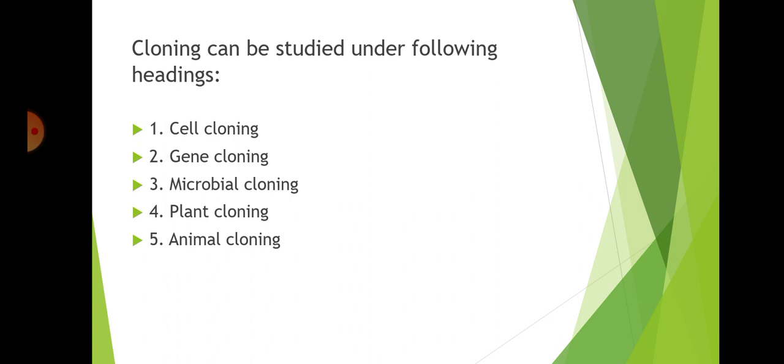Animal cloning: Dolly, the world's first mammalian clone, was formed from a completely differentiated non-genetic cell of a sheep. Dolly was born on 13th February 1996 at the Roslyn Institute in Edinburgh. The credit for its birth goes to Dr. Ian Wilmut and his colleagues. Scientists at Scotland also cloned the sheep Polly and Molly.